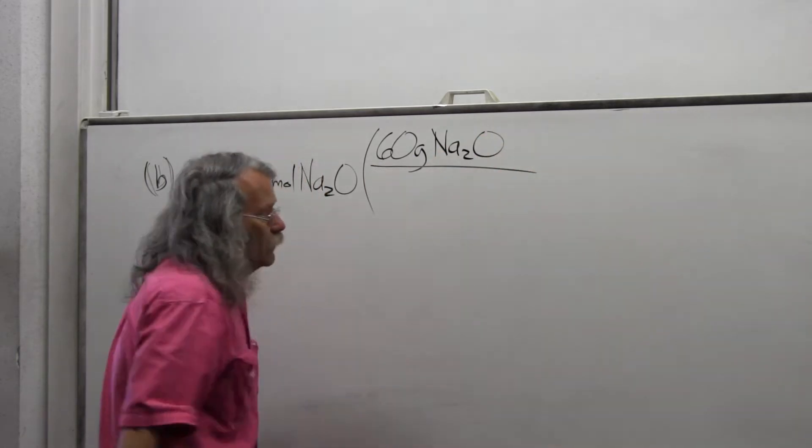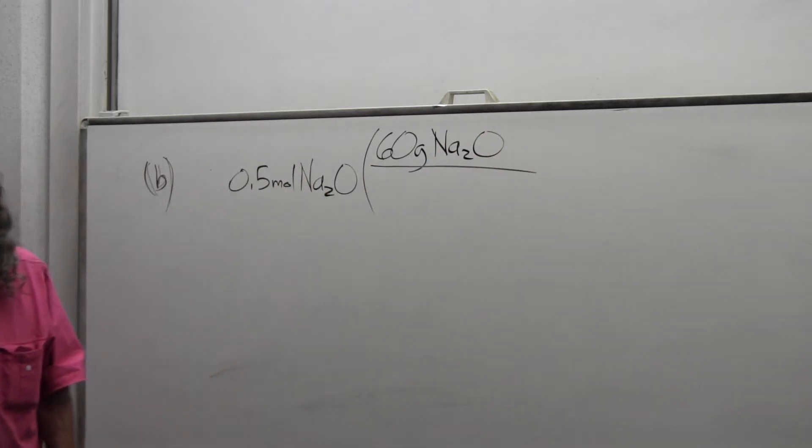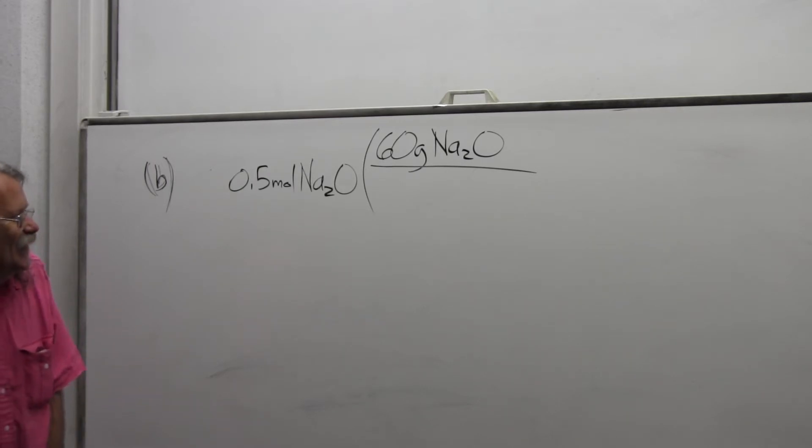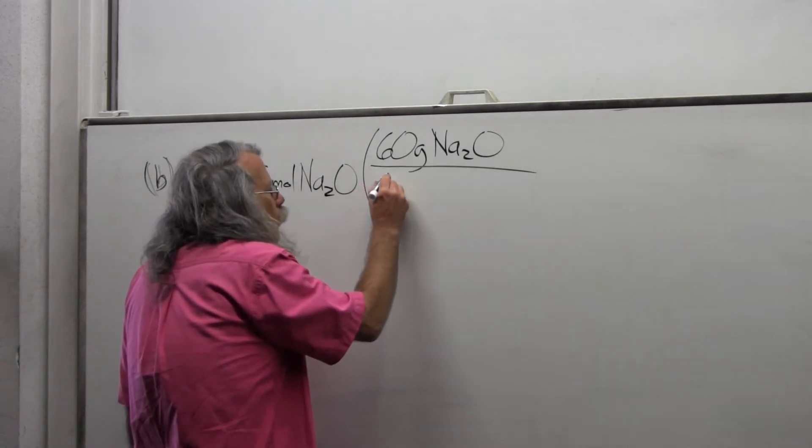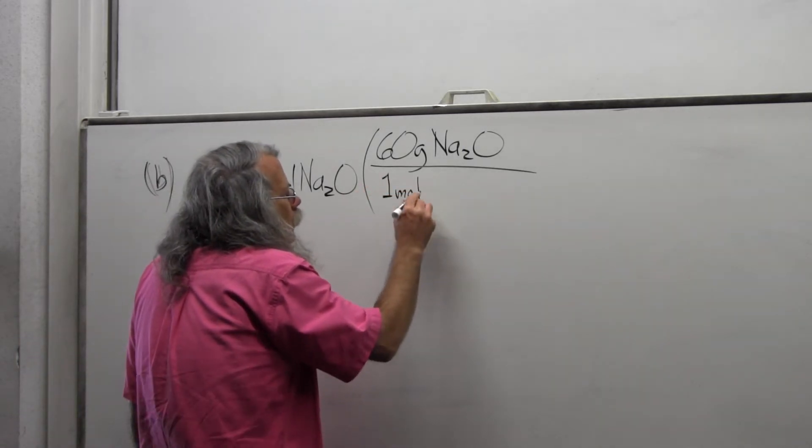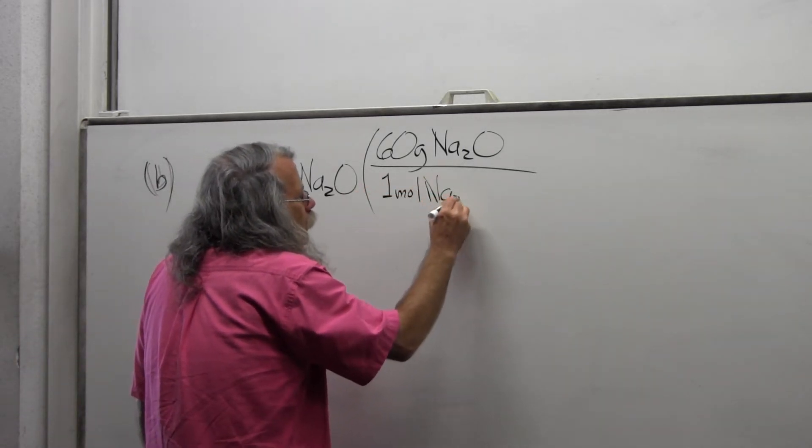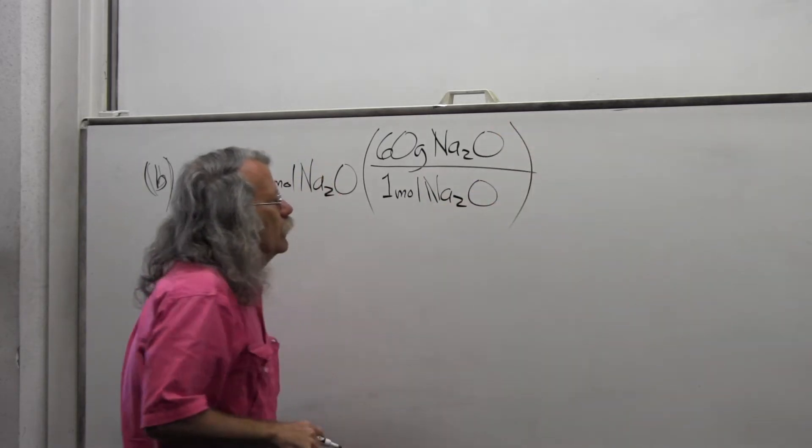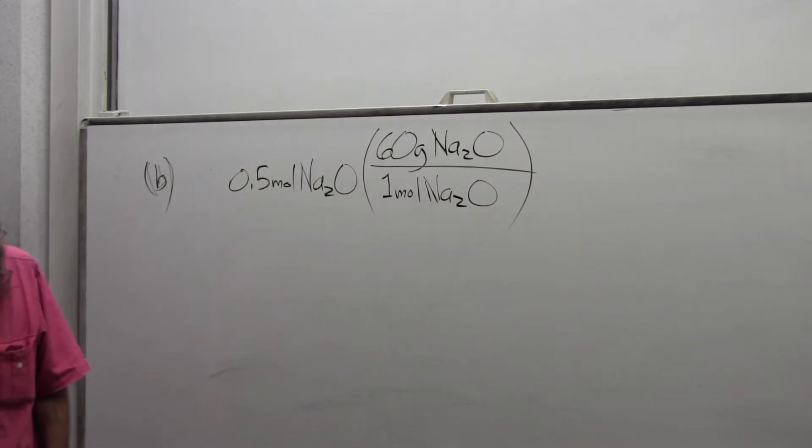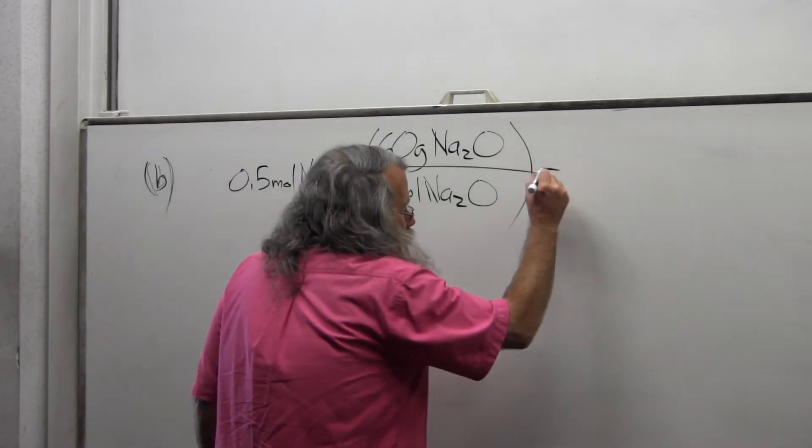So I'm going to need to go from half a mole of sodium oxide—that's going to go to the numerator—and for every one mole of sodium oxide, which goes to the denominator. And so now moles of sodium oxide cancel. I'm in grams of sodium oxide, so I'm already done. This is a simple one-term process.